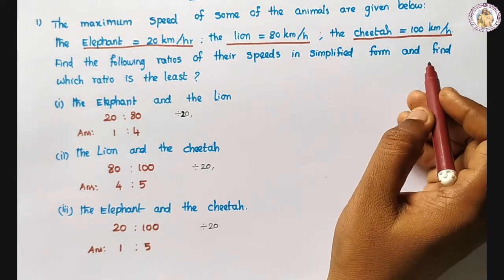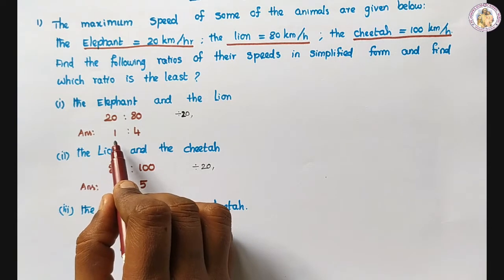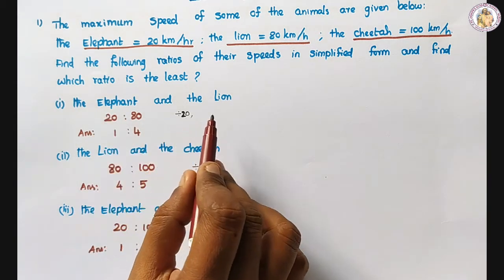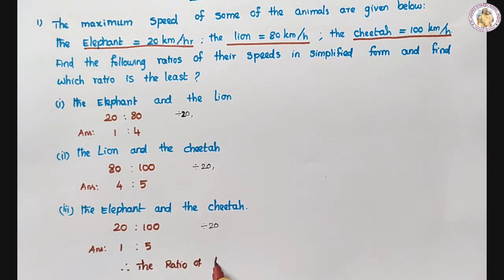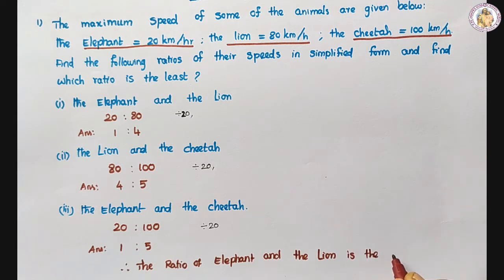And one more question: find which ratio is the least. The ratios are 1 is to 4, 4 is to 5, and 1 is to 5. The elephant and the lion ratio is the least. Therefore, the ratio of elephant and the lion is the least.